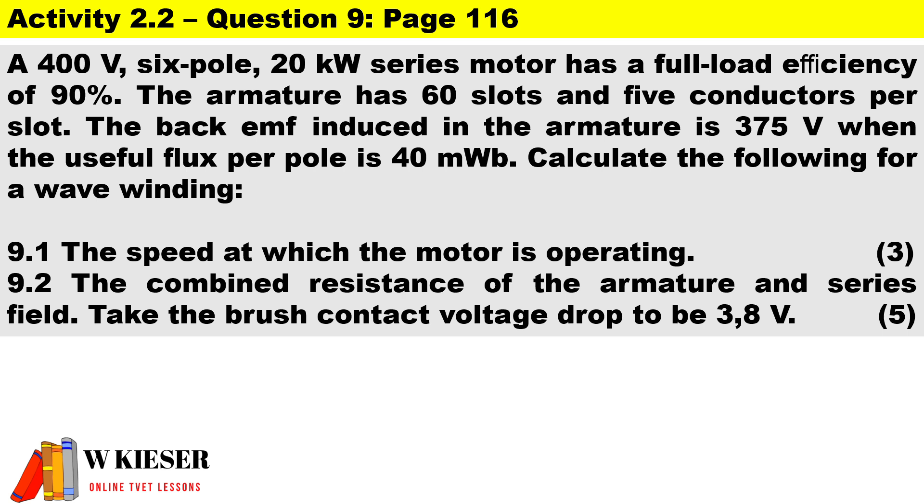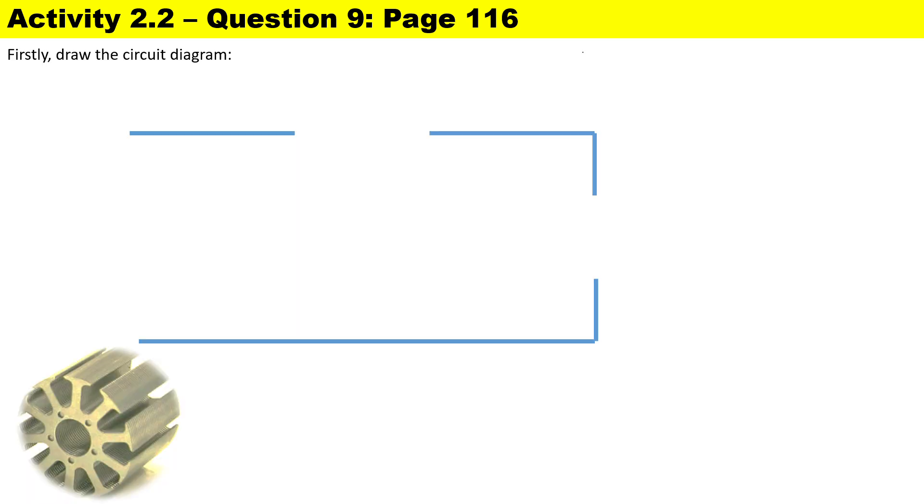Considering it is wave wound, let's take a look at our diagram. First of all it is a series motor, so the field winding is in series with the armature. There's our carbon brushes and we have our armature assembly. Make a note to yourself this is a motor.